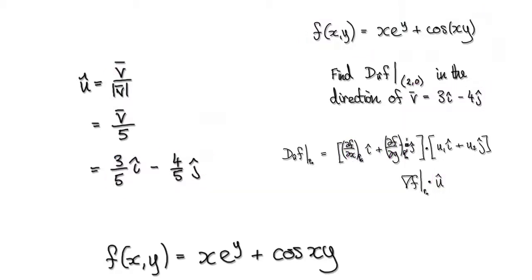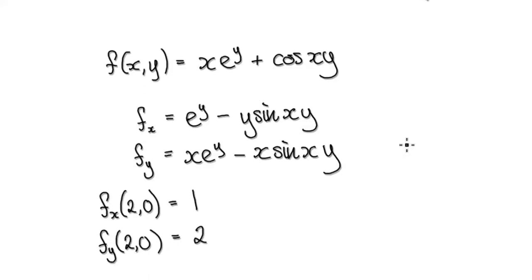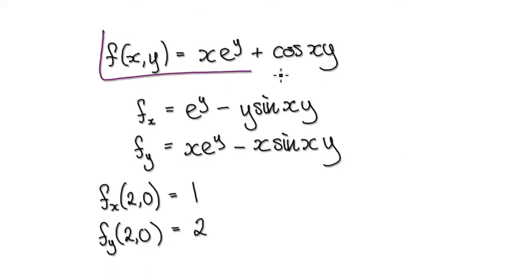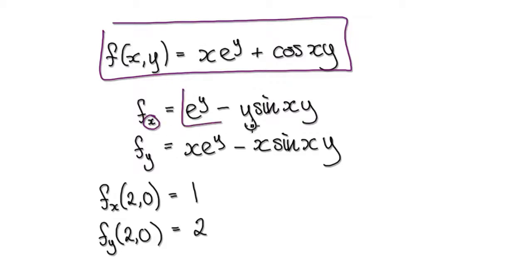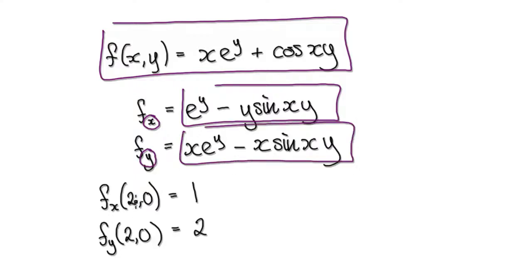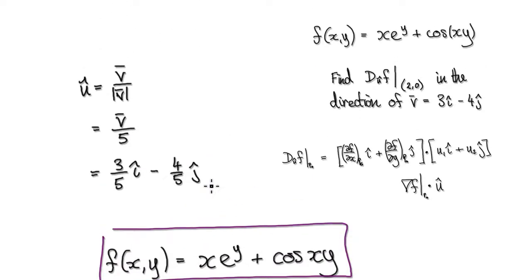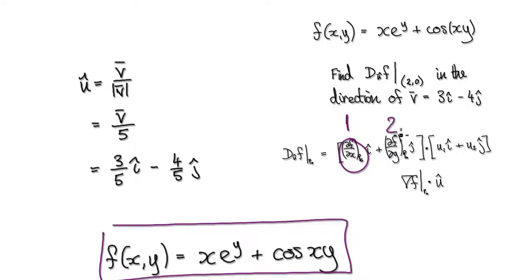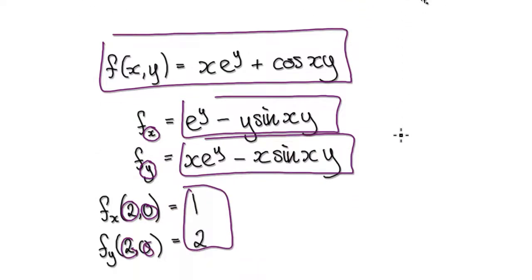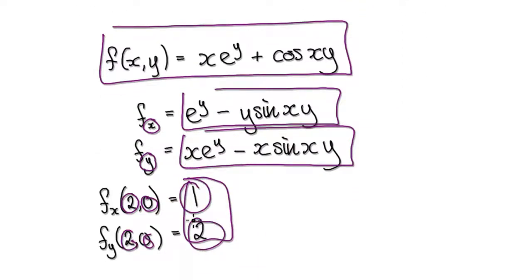Now we need to obtain the partial derivative with respect to X and the partial derivative with respect to Y. Looking at our surface, partially differentiated with respect to Y, that gives you this. Evaluating it at (2, 0) gives you this. So our gradient vector is 1 across and then 2 up.